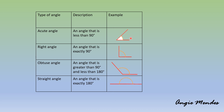Have you seen these angles in your day-to-day life? Here is a clue: if you look at a clock and the hands of the clock, you might be able to see these angles made by the hands of the clock. Observe the things around you and make a note of where you can see angles.